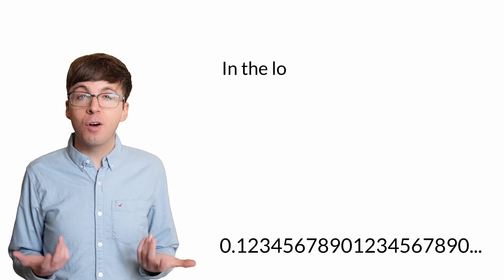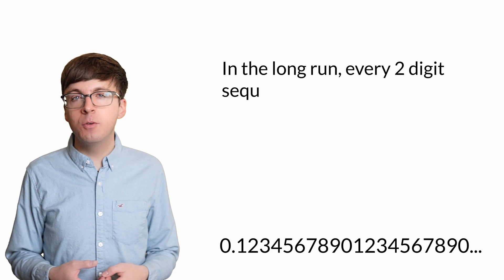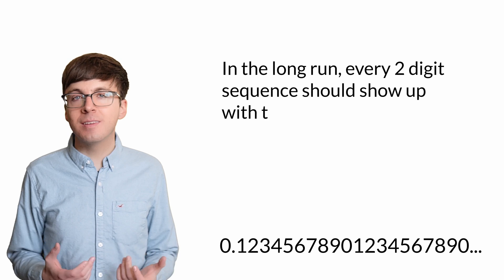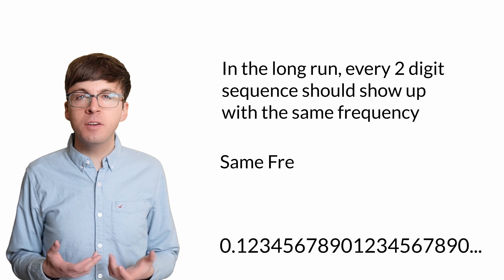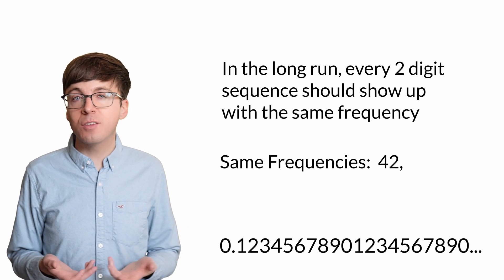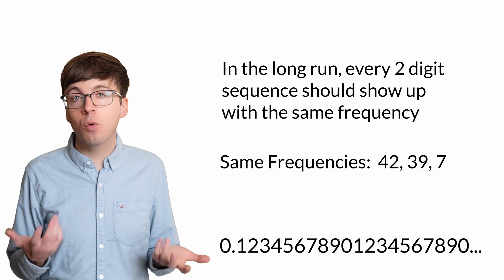If digits are chosen uniformly at random, then in the long run, every 2-digit sequence should show up with the same frequency. In the long run, we should see 4-2 as often as 3-9 or 7-1.